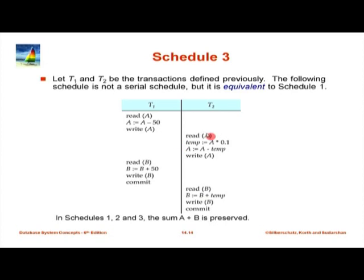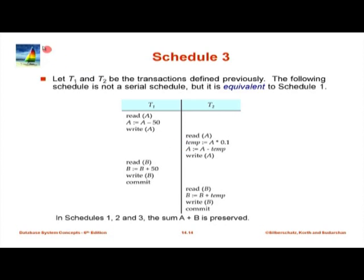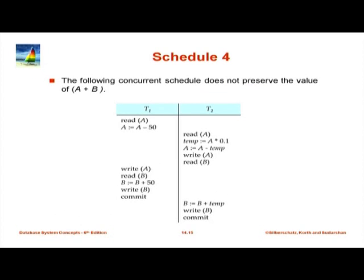Notice that some pairs of operations, like write A from T1 and read B from T2, can be swapped without affecting results because they access different data items. Similarly, write B and write A can be swapped, and read B and read A can be swapped — reads do not conflict. The problem arises when one operation is a read and another is a write on the same item, or when both are writes on the same item — then you have a conflict and the order matters.